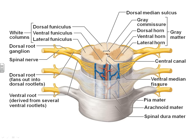The gray matter is connected in the middle by what's called the gray commissure, and then we have the central canal directly in the center. Looking at the areas of the spinal nerve coming off, notice in the dorsal region there is a large bump called the dorsal root ganglion. Remember that a ganglion is a collection of cell bodies in the peripheral nervous system.